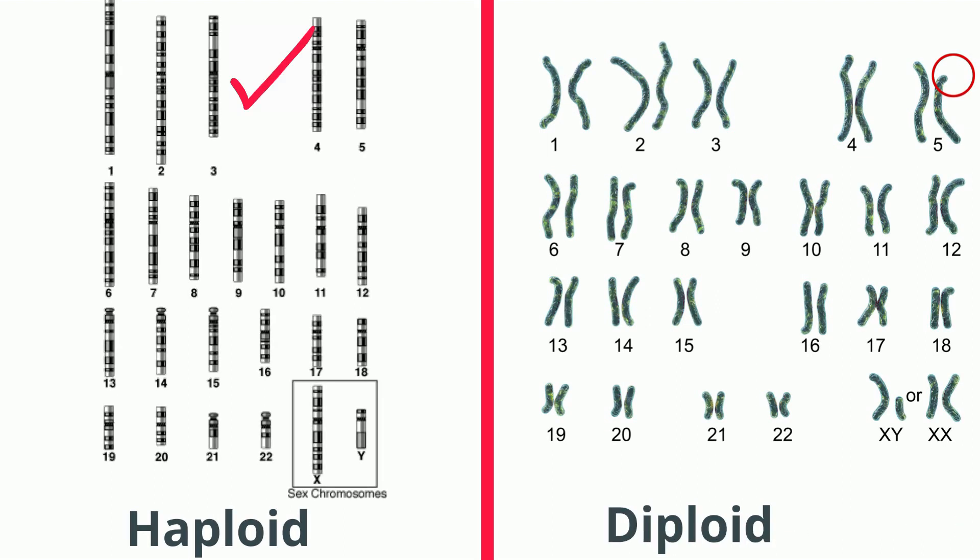Haploid cells have one chromosome and are represented with N. Notice that there are 23 chromosomes in this haploid cell.